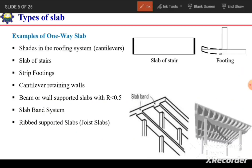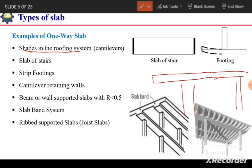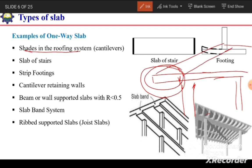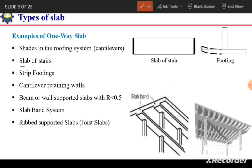Some real-world examples of one-way slabs include shades in roofing systems, which are always one-way. For example, a slab supported by a wall with a portion extending beyond as a shade — that extended shade portion is considered a one-way slab.